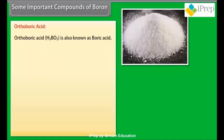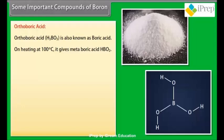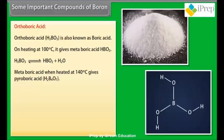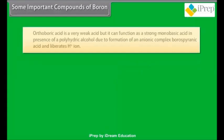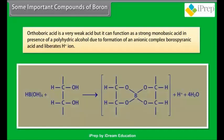Orthoboric acid: orthoboric acid H3BO3 is also known as boric acid. On heating at 100 degrees Celsius, it gives metaboric acid HBO2. Metaboric acid when heated at 140 degrees Celsius gives pyroboric acid H2B4O7, which when heated at high temperature gives B2O3. Orthoboric acid is a very weak acid but it can function as a strong monobasic acid in the presence of a polyhydric alcohol due to formation of an anionic complex borospironic acid and liberates H+ ions.